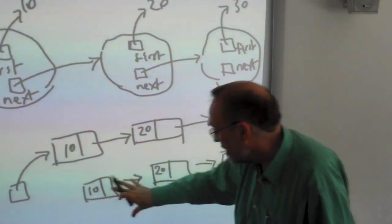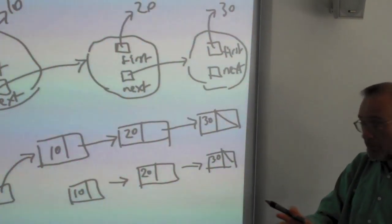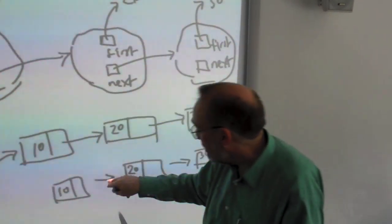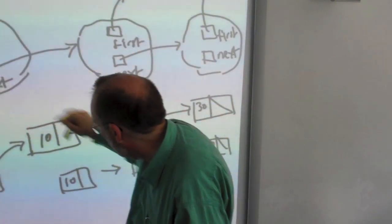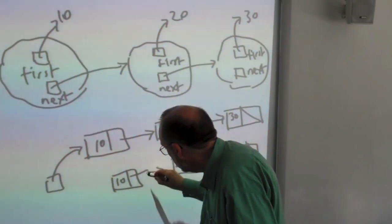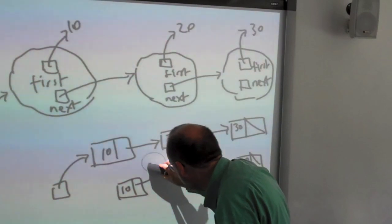This box represents an object. An arrow represents a variable referring to a cell. This arrow here is this arrow here from the next to the whole object.